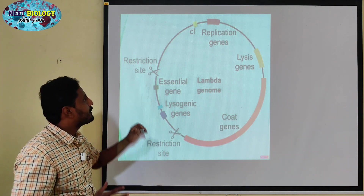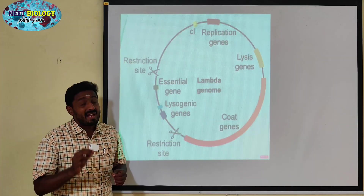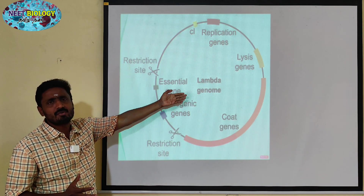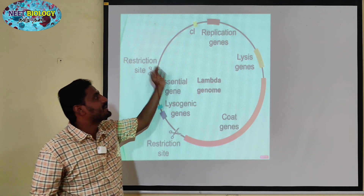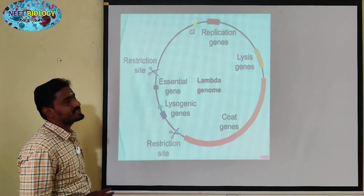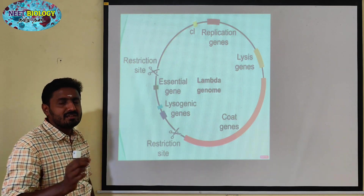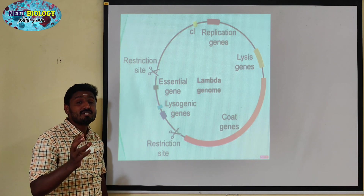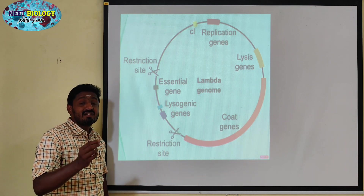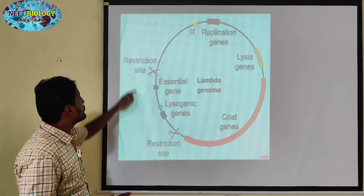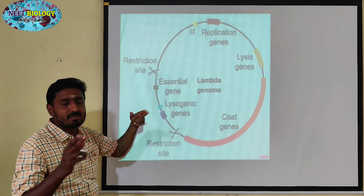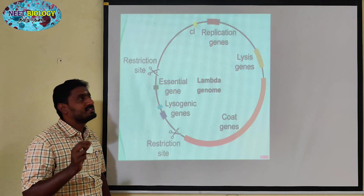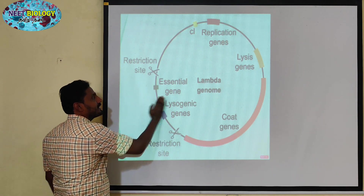We can see bacteriophage DNA — it is a lambda phage. If we are using it as a DNA vector, it has restriction sites where a restriction enzyme can act on a DNA segment.